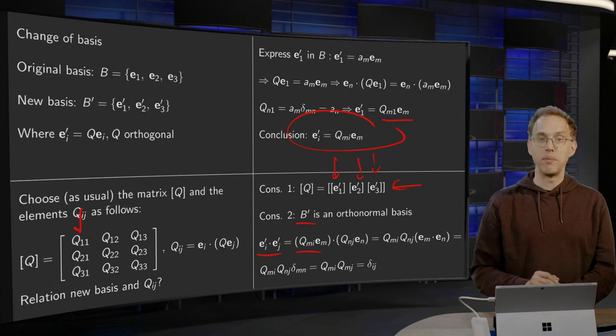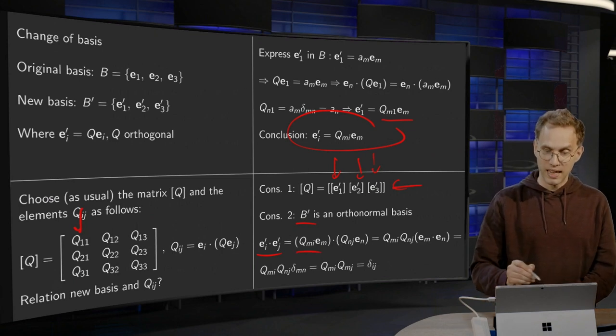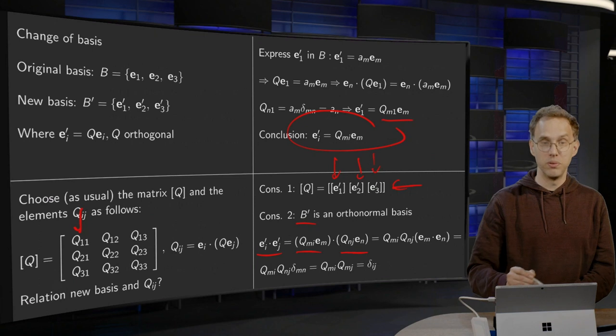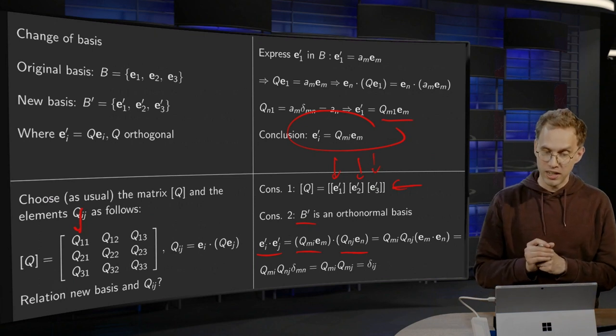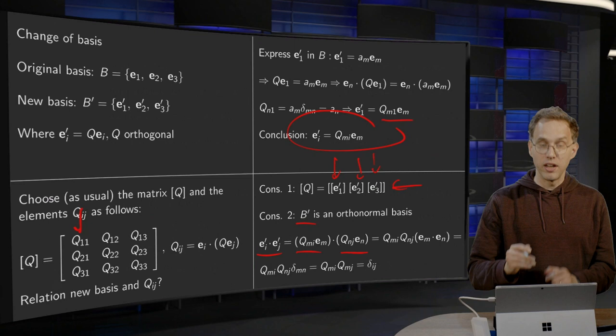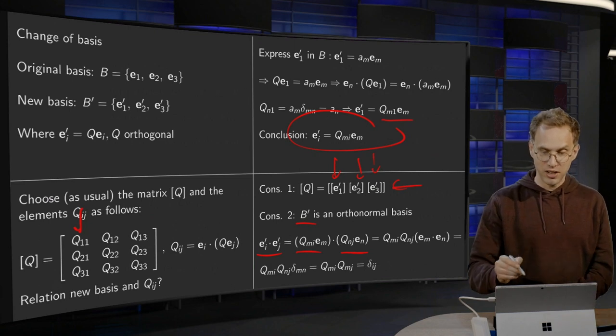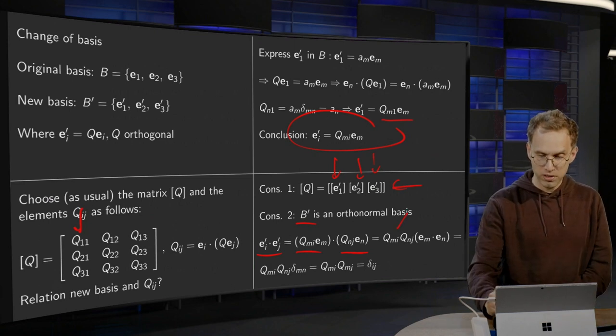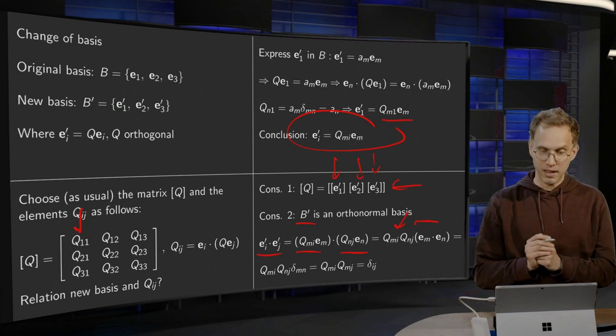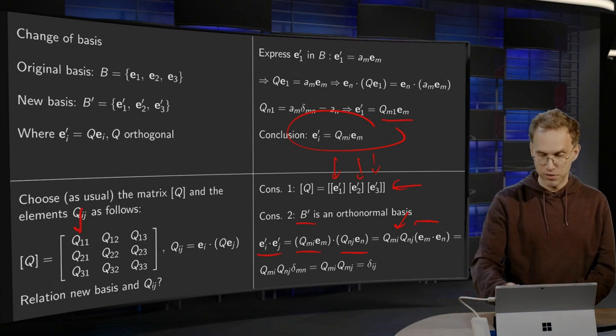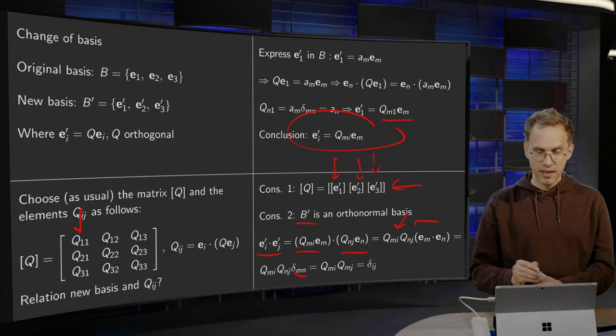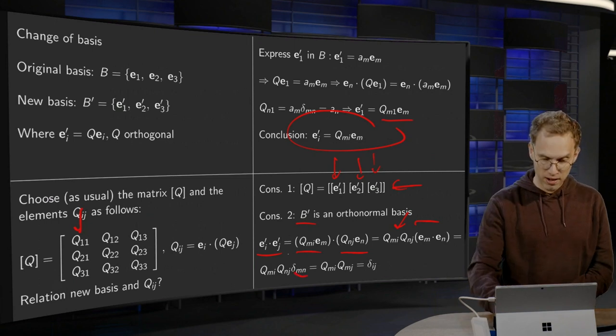So EI' gives you QMI*EM inner product EJ' which is QNJ*EN. The QMI and QNJ are just numbers, so you can take them in front. That's what's done over here. You're left with an inner product EM·EN, which is obviously delta_MN.